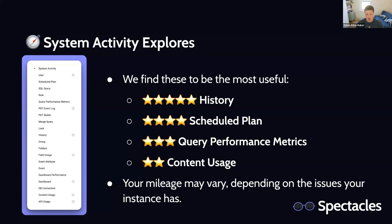This is our experience across a number of years using Looker, but everyone's Looker instance is a little different and your mileage may vary. If you have a particular issue around licensing and need to reduce costs, the user explorer is going to be most useful. If you've got really slow PDT builds, the PDT builds explorer might be useful. Our experience is that around performance — whether it's the warehouse sending slow queries or not using caching enough — or content bloat, these four explorers are where a lot of questions get answered.